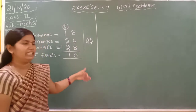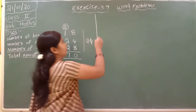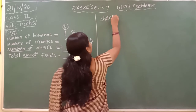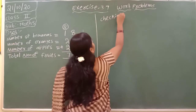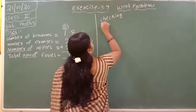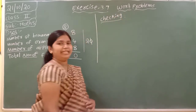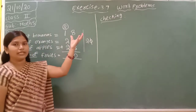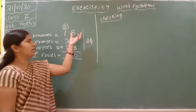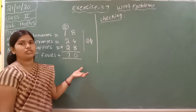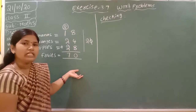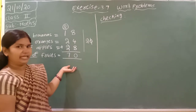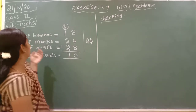Now what we have to do? Checking. What do you mean by checking? Checking means if we change the order of the numbers — the order of the fruits — then also we will get the same answer. We will check now.